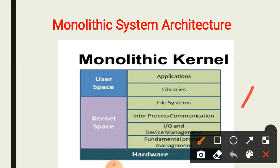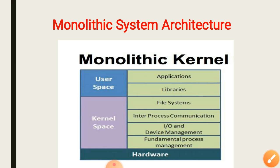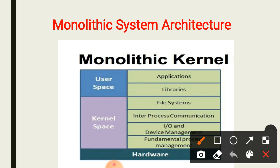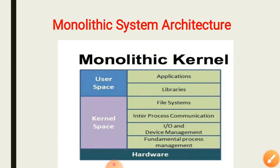In monolithic system architecture, there are two types of spaces: user space and kernel space. User space consists of applications and libraries, whereas kernel space consists of the file interface, libraries, inter-process communication, I/O and device management, and fundamental memory management. The kernel is used to distinguish between hardware and software. Whatever application the user wants to run must first pass through the kernel space, and from the kernel space only it has access to use the application.